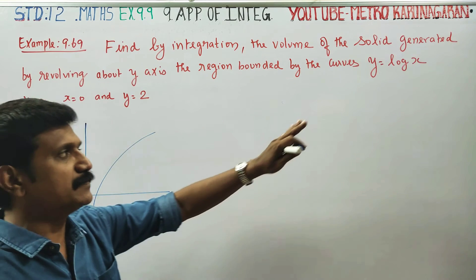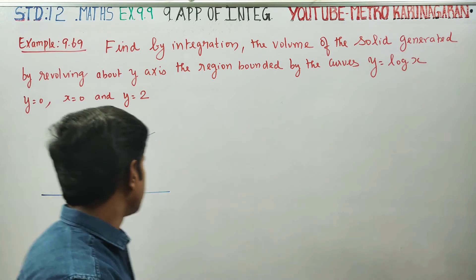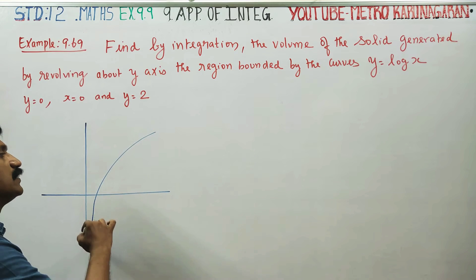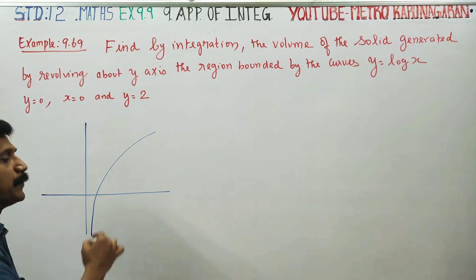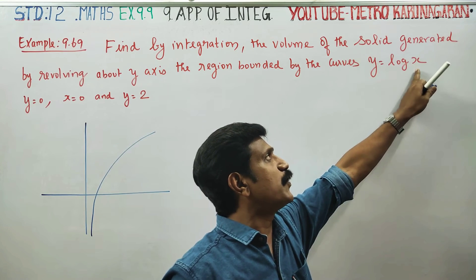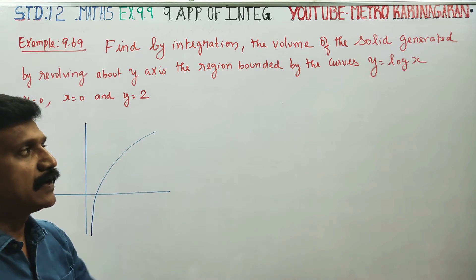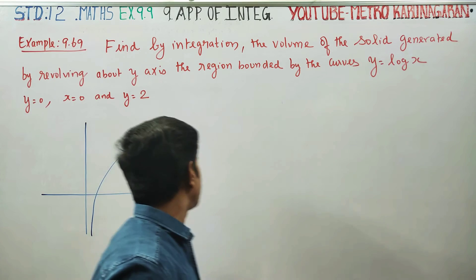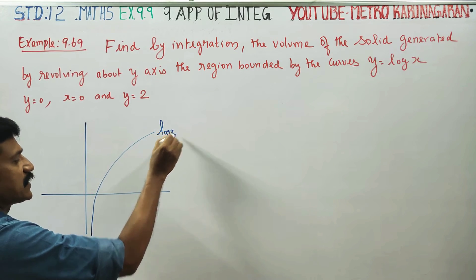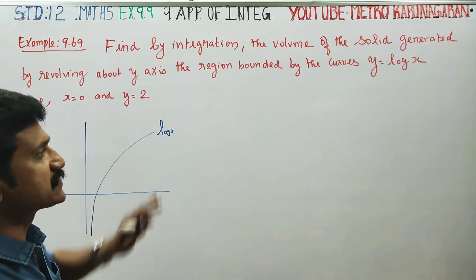For positive values of x, the curve y = log x exists only for positive values of x. The curve has negative values of y for x between 0 and 1, and positive values of y for x greater than 1. This is the log x curve.